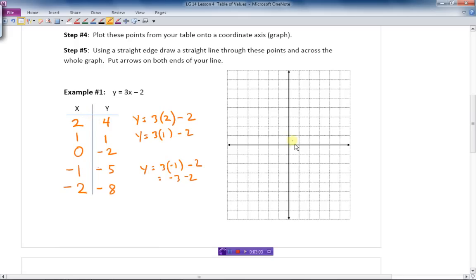Let's plot those. So 2, 4. The X is 2, over to the right 2 and up 4, and that gives me that one point. 1, 1. So right 1, up 1. There we go. 0, negative 2. So 0, I don't go left or right, I just go down 2 here. The Y is negative 2.